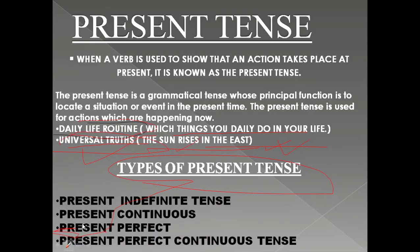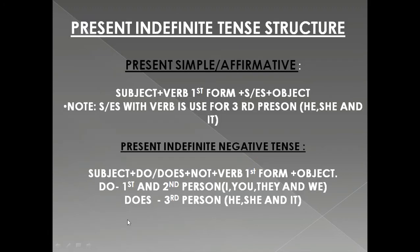So the types of present tense are: present indefinite tense, present continuous tense, present perfect tense, and present perfect continuous tense.